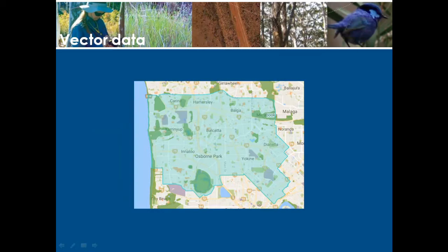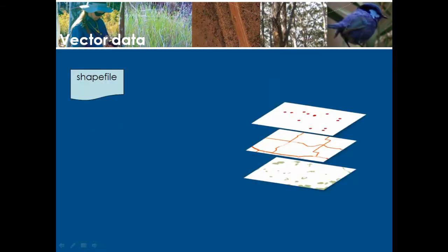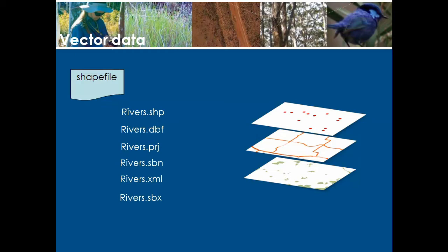One of the most popular vector formats to use are called Esri shapefiles. They are the basic building blocks for storing geometric location and attribute information of geographical features, which can be represented as points, lines, and polygons. Shapefiles comprise up to 15 individual files, with the most common being .shp, which stores the feature geometry; .dbf, which stores the feature's attributes; .prj, which stores information about the data's projection; and a number of other spatial index files and file types like .sbn, .sbx, and .xml.